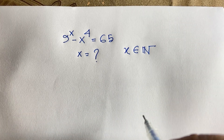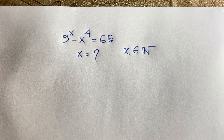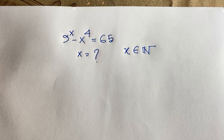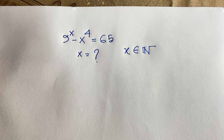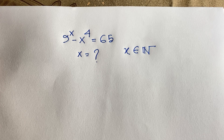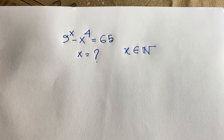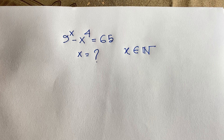Hello everyone. In this video we solve this wonderful exponential equation — a Morocco Math Olympiad question: 9 to the power x minus x to the power 4 is equal to 65. What is x? If you think x is equal to 1, then 9 to the power 1 minus 1 to the power 4 is not equal to 65.